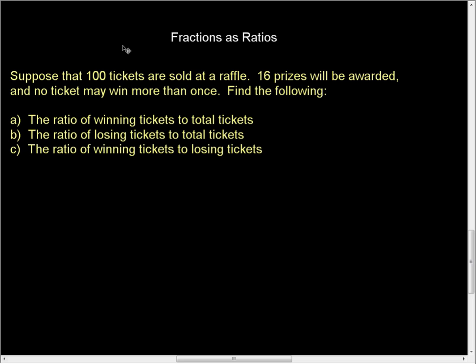So here we have a problem. Suppose that 100 tickets are sold at a raffle, and 16 prizes will be awarded, and no ticket may win more than once. Find out the following. As we look at this, we need to understand fractions as ratios and how they look.